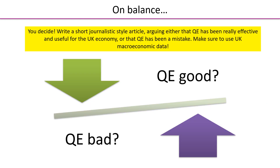So on balance, we'd like you to write a short journalistic style article arguing either that QE has been really effective and useful for the UK economy, or that QE has been a mistake — choose one or the other. Very good practice would be to do both: one very much for and one very much against. Make sure you use real live data and make sure you put some graphs in there.